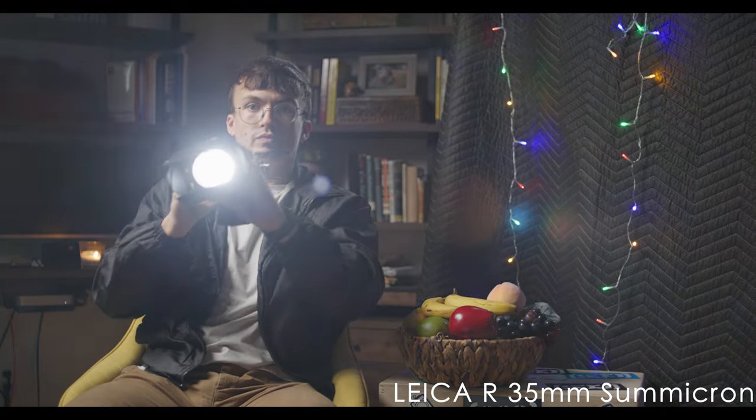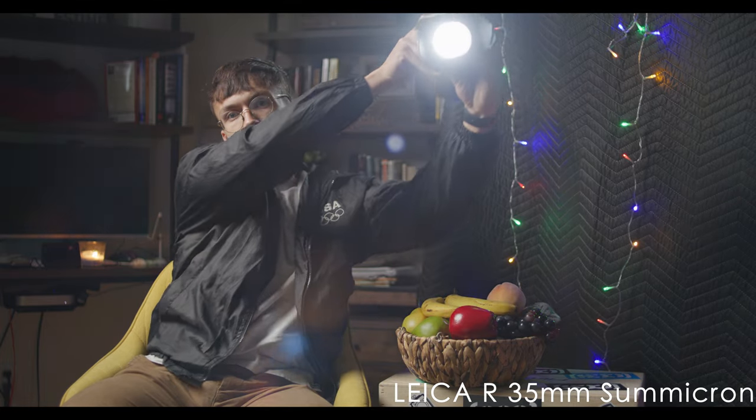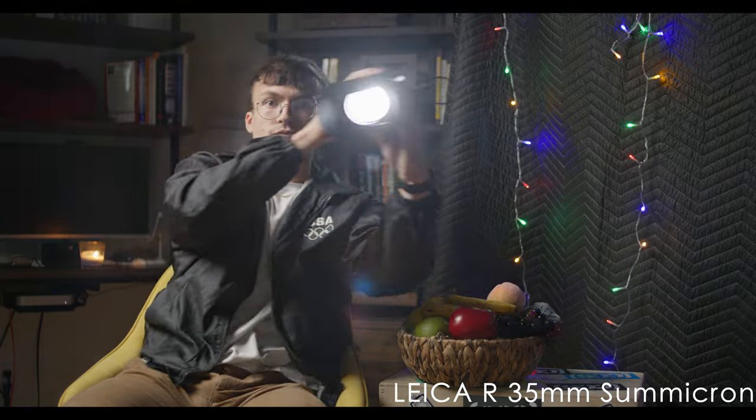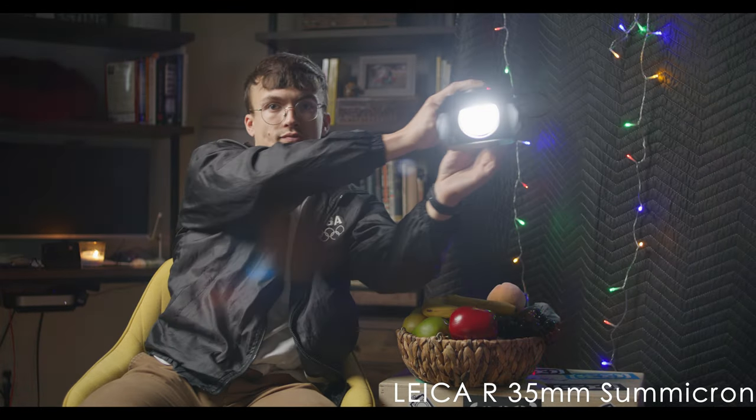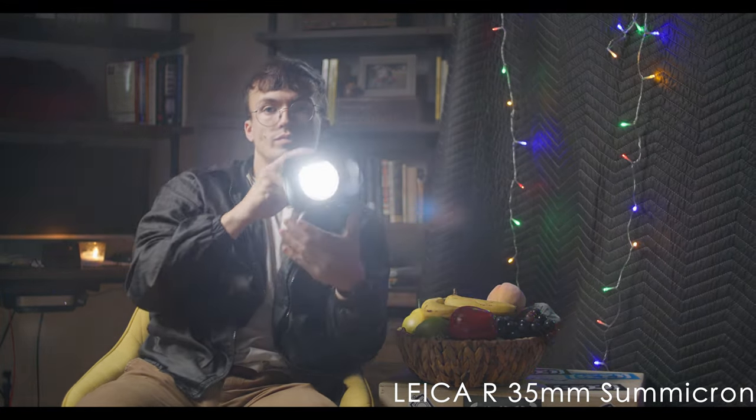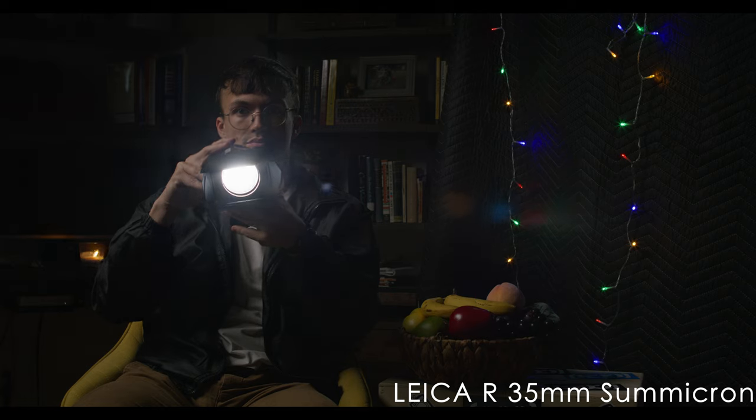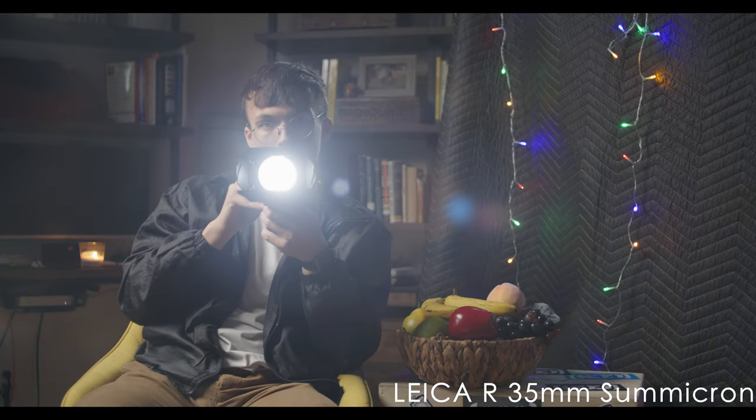Now here is the flare test. And the Leica R, again, this one is the 1970 version 1, so this one has a lot more ghosting, a lot more flaring. It behaves a lot differently than the version 2. That is why the version 2 is more sought after. It's a little bit lighter of a lens, but the version 2 also does not suffer from as bad ghosting.